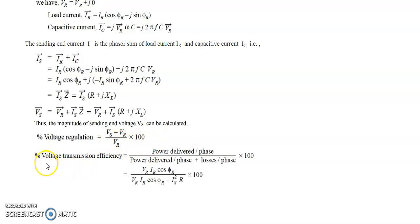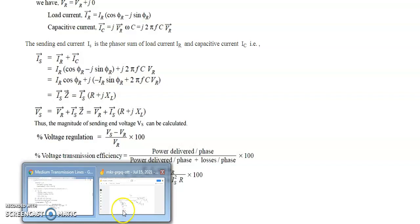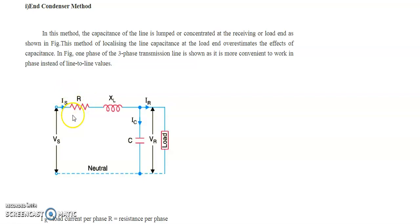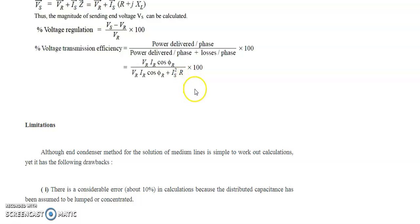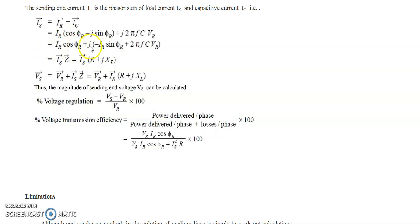The percentage transmission efficiency is output power delivered divided by output power delivered plus losses. Here Vr·Ir·cos(φr) is the power delivered at the receiving end, and Is²·R is the power loss — the I²R or heat loss component. Is·Z is the voltage drop expression across the line.